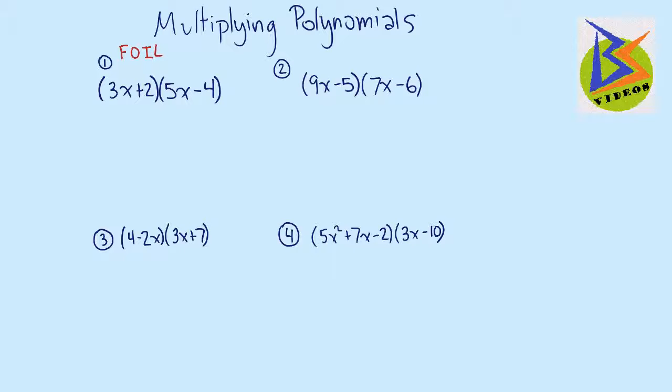Now, all FOIL stands for is first, outer, inner, and last. And so it's this idea that we first multiply the first terms. So we take 3x times 5x.